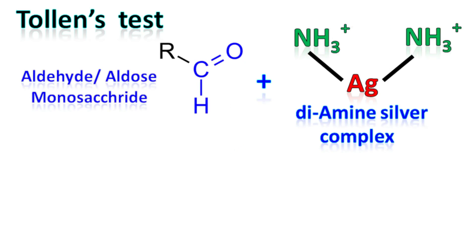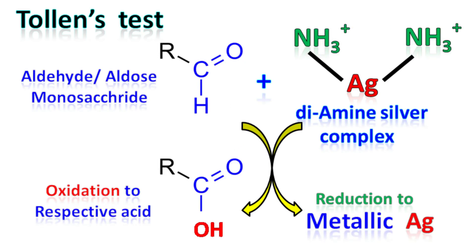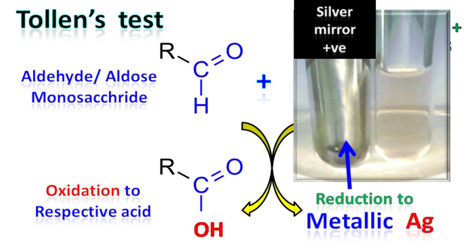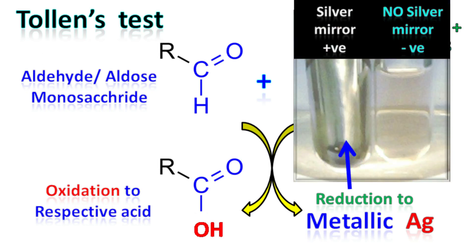When an aldehyde or an aldose monosaccharide reacts with the diamine silver complex, the aldehyde group is oxidized to an acid while the silver ions are reduced to metallic silver. The reduction of silver ions to metallic silver results in the formation of a silver mirror on the surface of the test tube, which indicates a positive Tollens test. Because of this, Tollens test is also known as the silver mirror test.